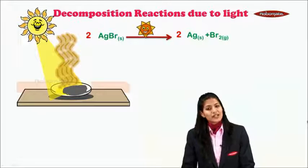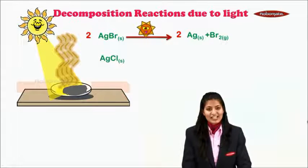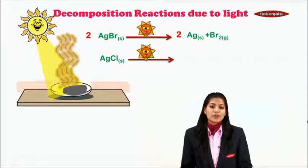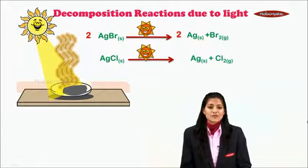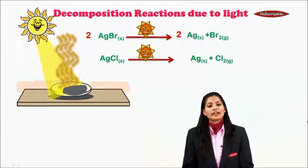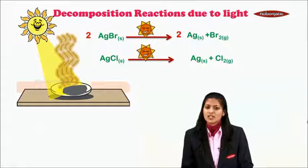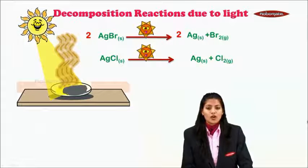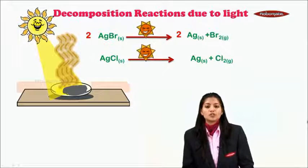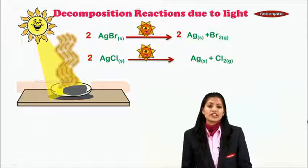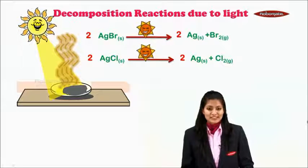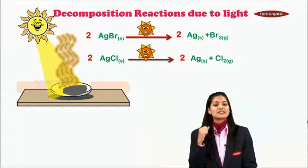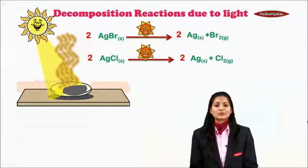Now consider a similar reaction: AgCl exposed to sunlight. AgCl is a white colored substance, and when exposed to sunlight, similar observations are made — formation of a grey colored substance along with release of vapour. The grey substance is again silver, and the vapours are of chlorine. Balancing: right side has 2 chlorine, left has 1, so make it 2AgCl, giving 2Ag on the right: 2AgCl → 2Ag + Cl₂. Again, decomposition due to light.